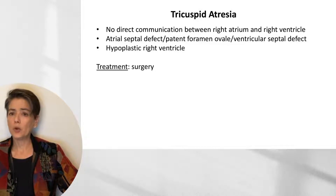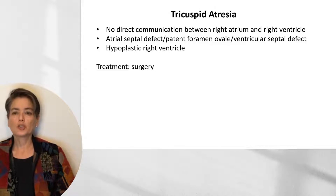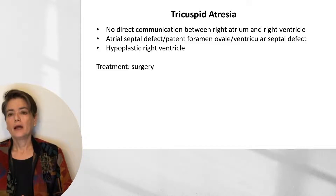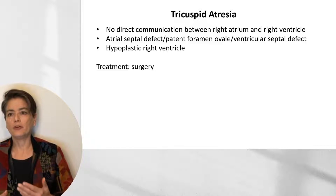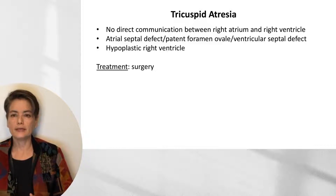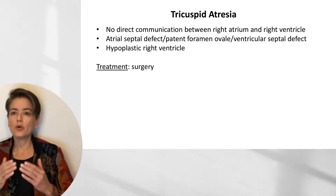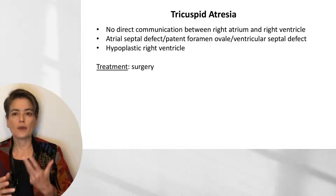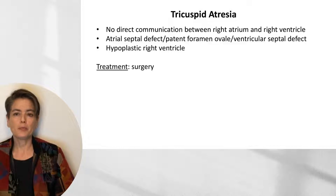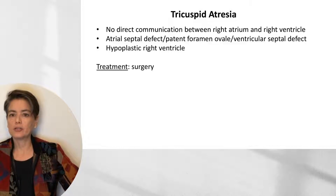The final entity among the five T's is tricuspid atresia, where there is no direct communication between the right atrium and the right ventricle — atresia meaning no growth at all. To maintain life, some communication is required: an ASD, PFO, or VSD. Because there is no pressure against which the right ventricle can push, we get hypoplasia of the right ventricle. Treatment is surgery.